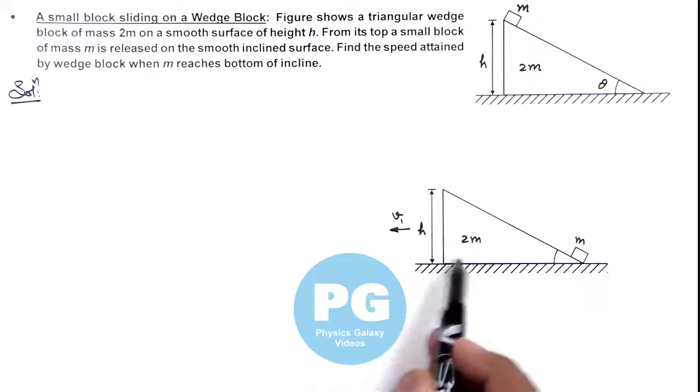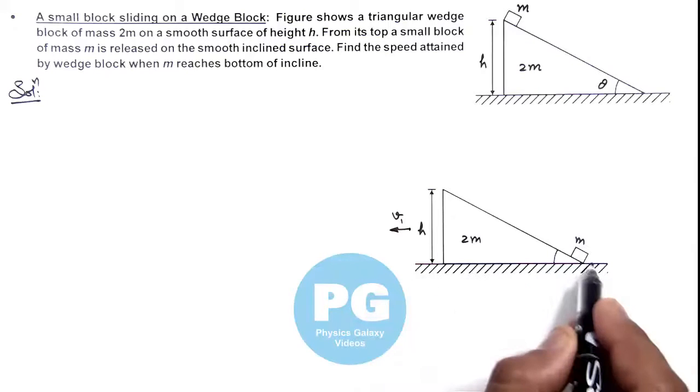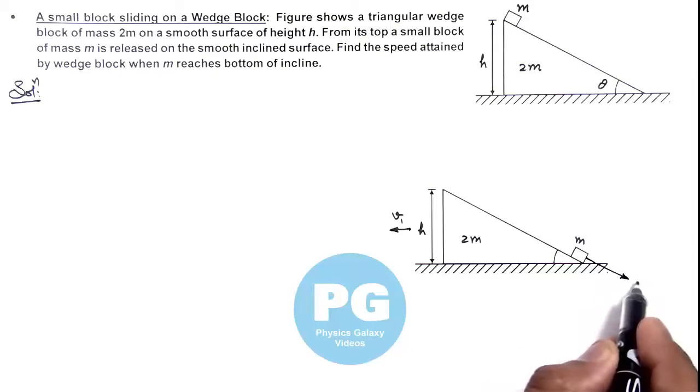This wedge block will attain a speed say v1, and with respect to this block say if m is gaining a velocity v2.